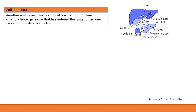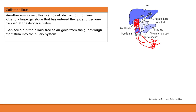Gallstone ileus is a misnomer — it's actually a bowel obstruction, not hypomotility. A large gallstone erodes through the gallbladder and duodenum creating a fistula, travels through the small intestine, and gets trapped at the ileocecal valve causing obstruction. Air from the GI tract enters the gallbladder and biliary tree through this fistula — called pneumobilia — which is seen in gallstone ileus.